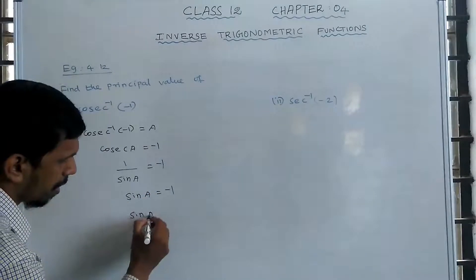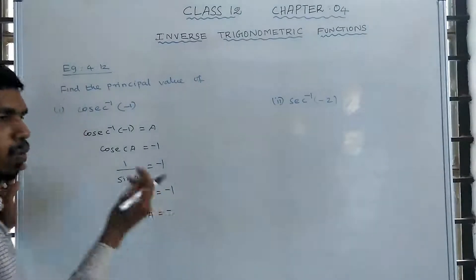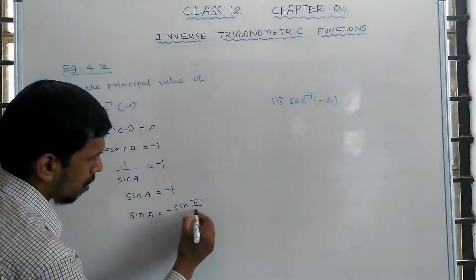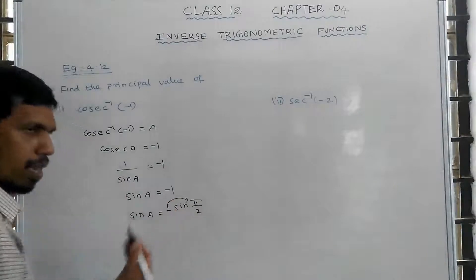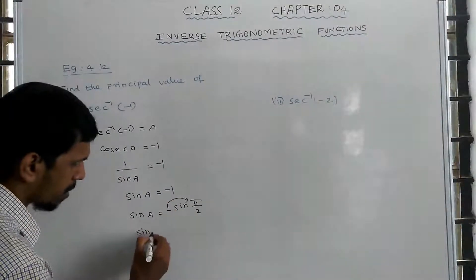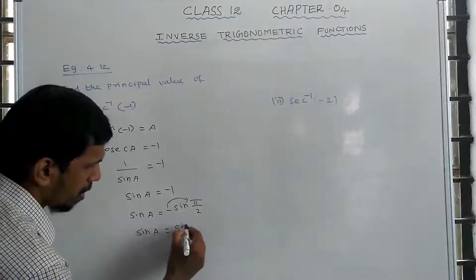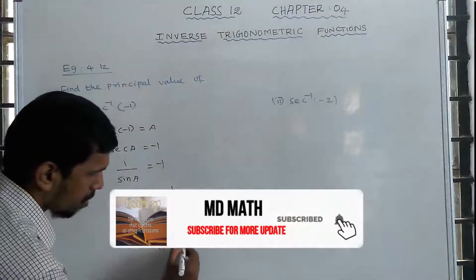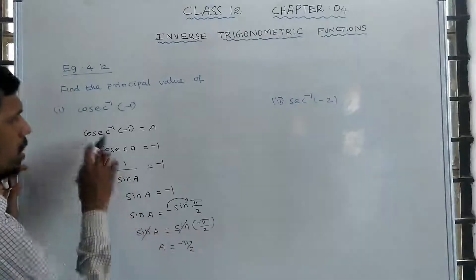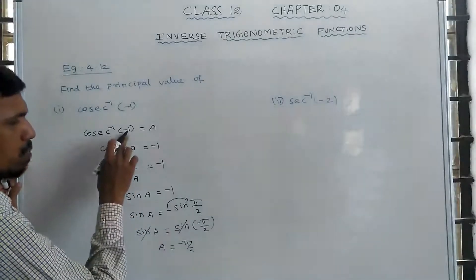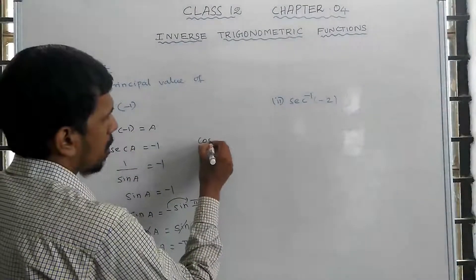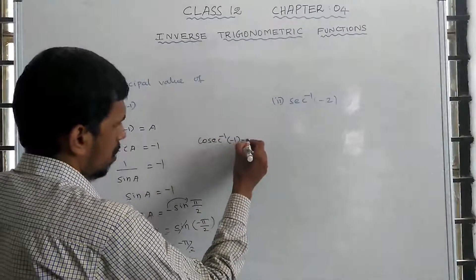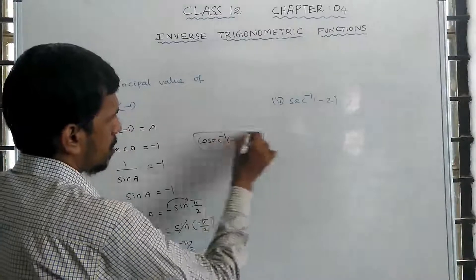Sin a equals minus 1. We know sin of minus π/2 equals minus 1, since π/2 is 90 degrees. So minus 1 means a equals sin⁻¹(minus π/2). Sin and sin cancel, giving a equals minus π/2. Therefore, cosecant inverse of minus 1 equals minus π/2. That is the result.